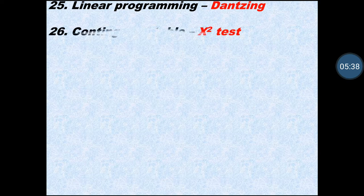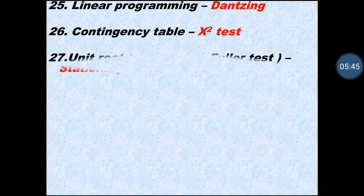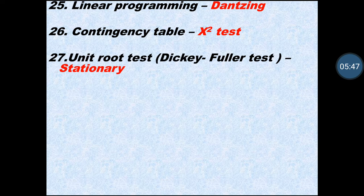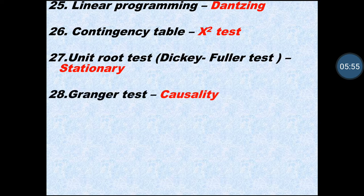Linear programming — this concept was first given by Dantzig. Contingency table is related to chi-square or X-square test. The unit root test is also known as the Dickey-Fuller test, and it tests for stationarity.